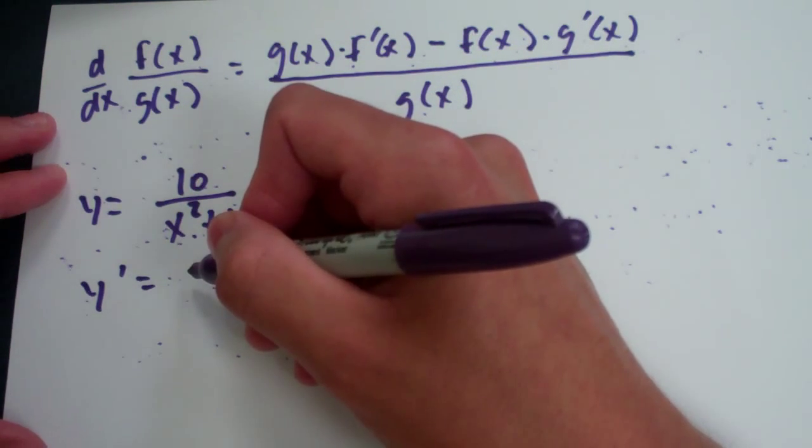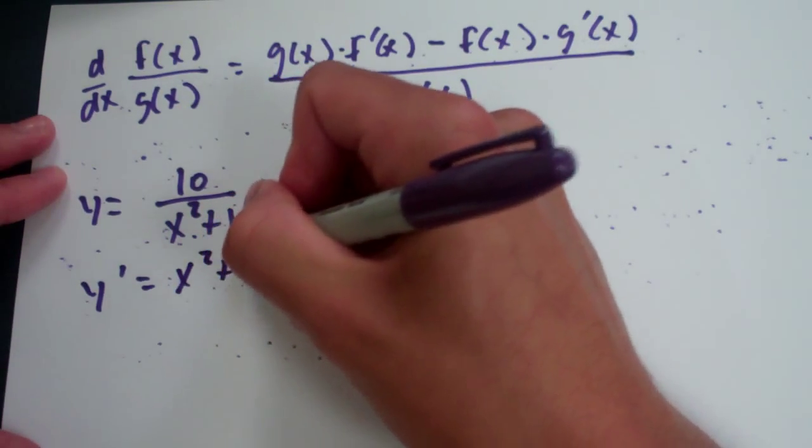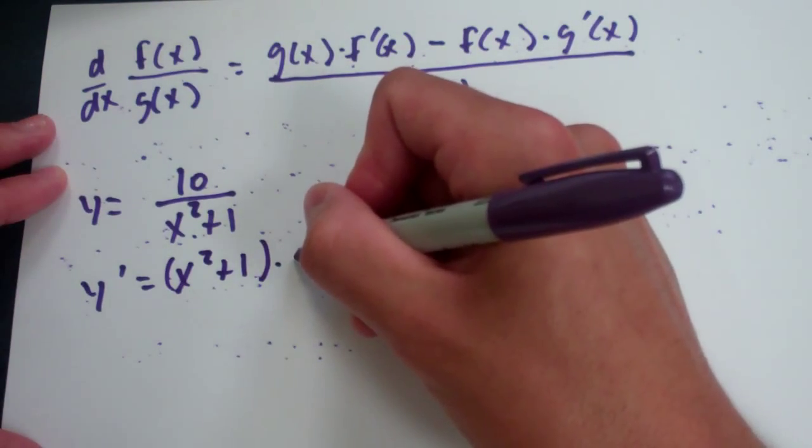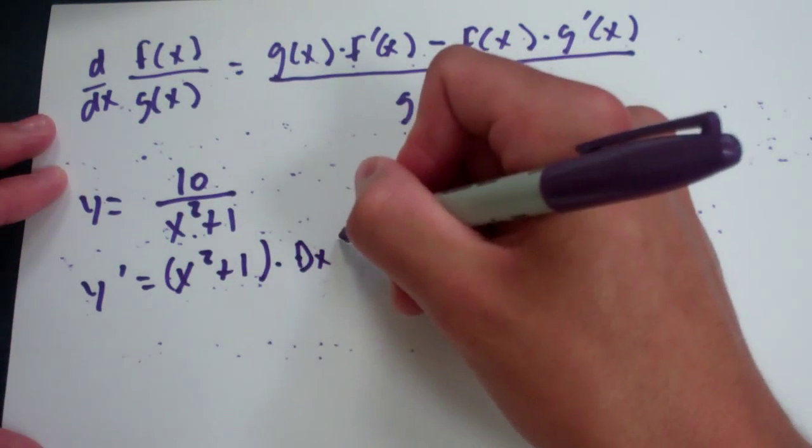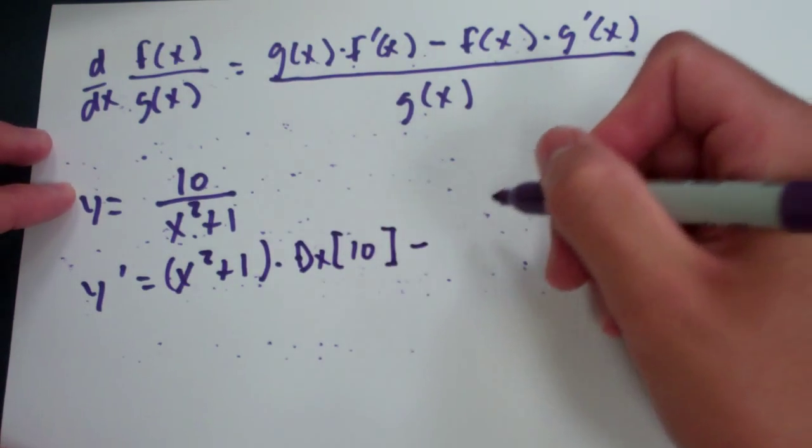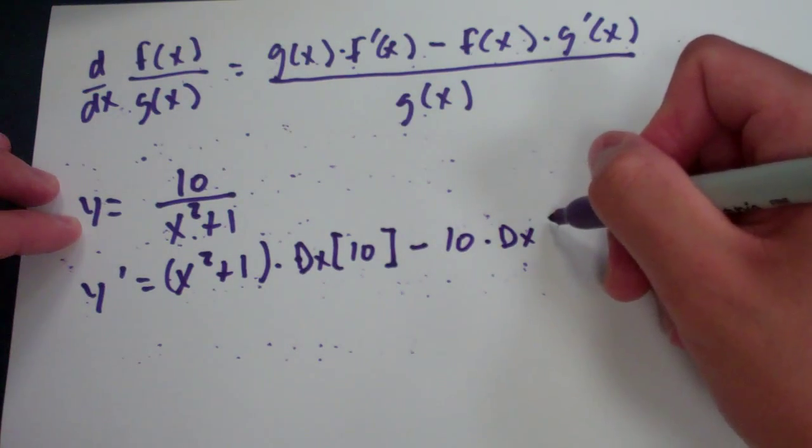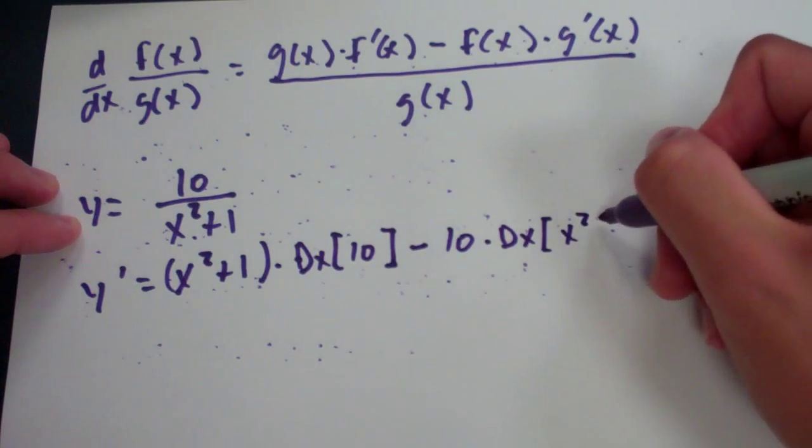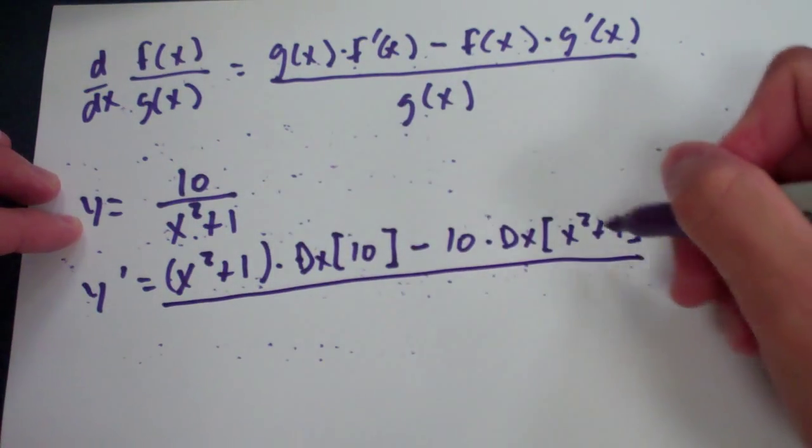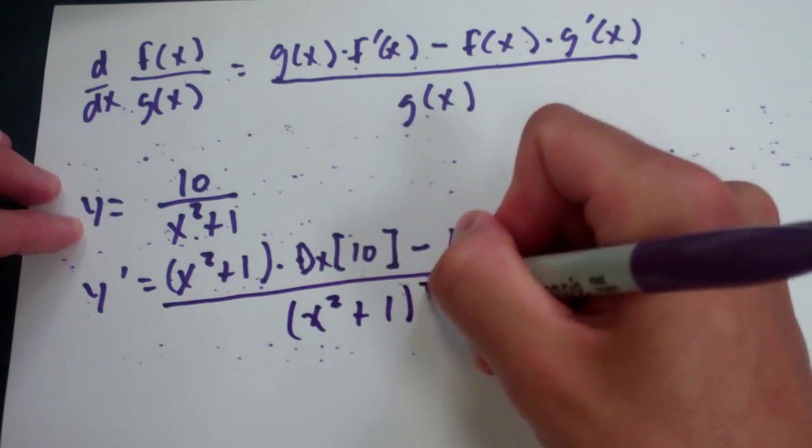It's too early in the morning, okay? Don't hold it against me. We have x squared plus 1 times the derivative of the top minus the top times the derivative of the bottom. All over this squared.